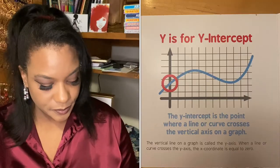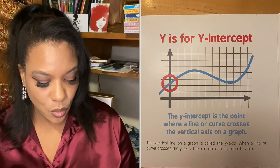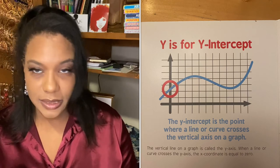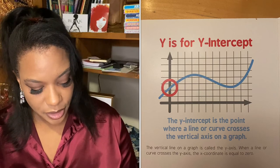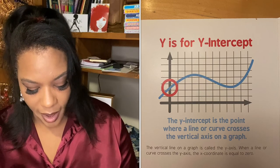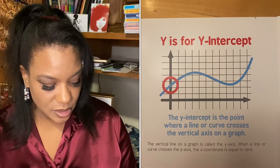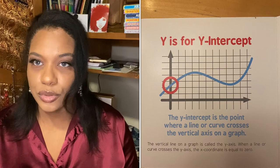Y is for y-intercept. The y-intercept is the point where a line or curve crosses the vertical axis on a graph. The vertical line on a graph is called the y-axis. When a line or curve crosses the y-axis, the x-coordinate is equal to zero.